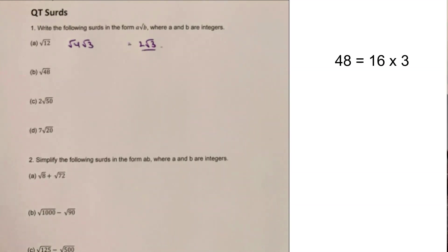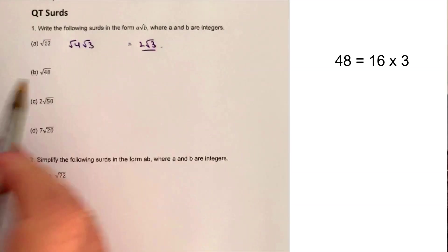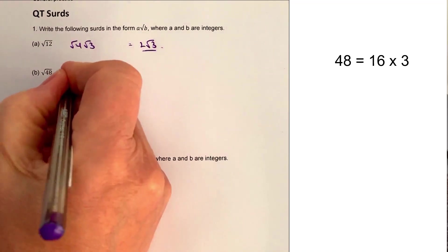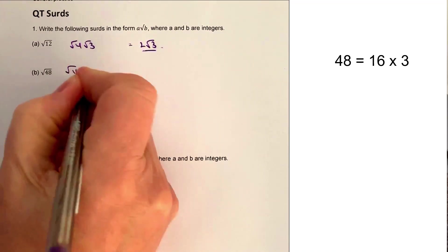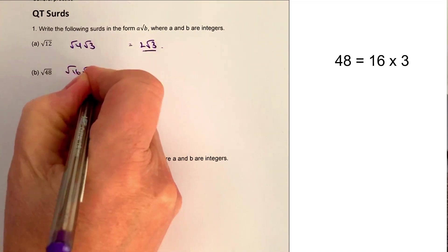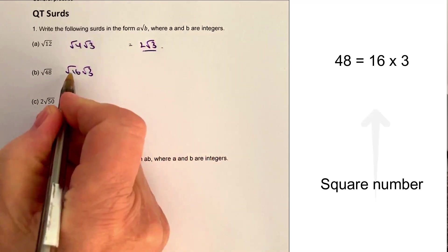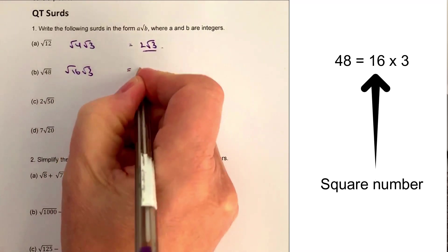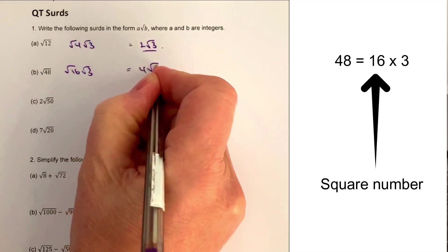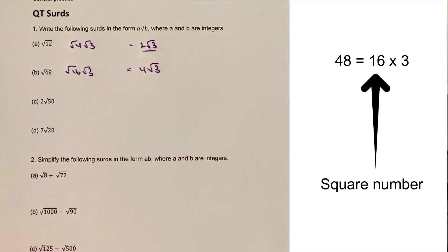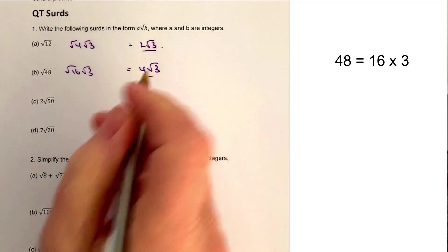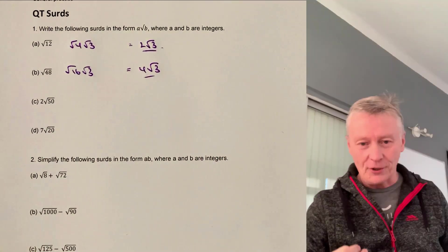The next question is root 48. Well, root 48 is the same as saying root 16 times root 3. The square root of 16 is 4, so that becomes 4 root 3. And that would be the answer to the second question.